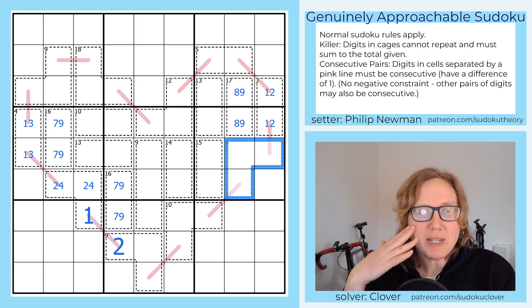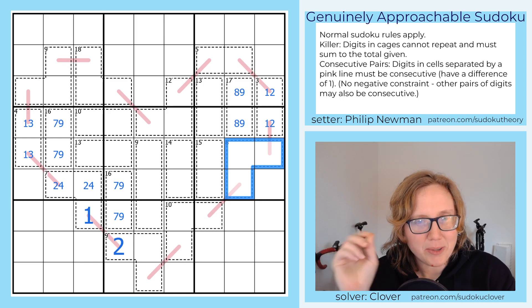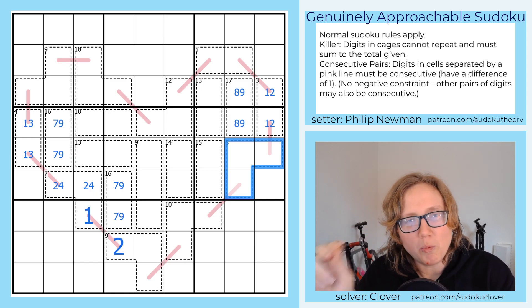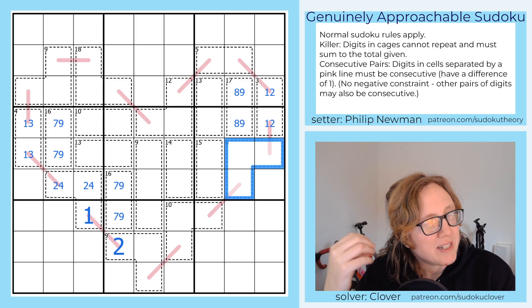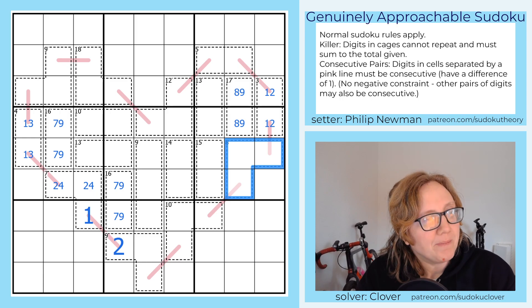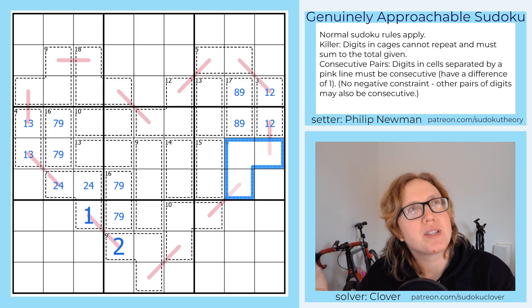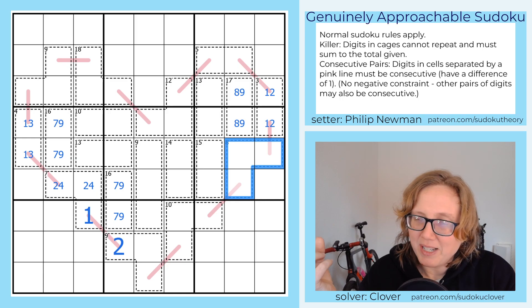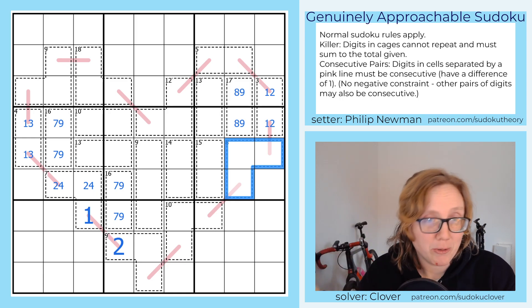Now, if you're going to fill a cage that sums to eight, let's work out our possibilities. So eight's quite small to do in three digits. We could go one, two, and five. Or we could go one and three and four. We can't start with anything bigger than one because even just two, three, and four is already too big. It sums to nine.